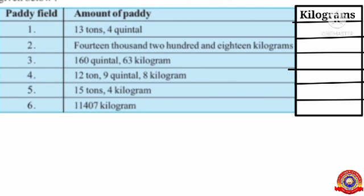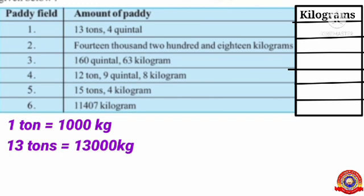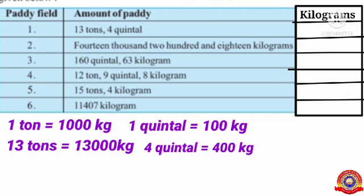The first field got 13 tons and 4 kindle of paddy. Here we have to convert 13 tons and 4 kindle into kilograms. You know that one ton equals 1,000 kilograms, so 13 tons equals 13,000 kilograms. One kindle equals 100 kilograms, so 4 kindle equals 400 kilograms. Total: 13,000 plus 400 equals 13,400 kilograms.